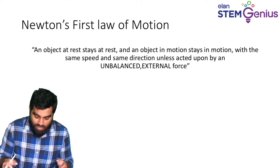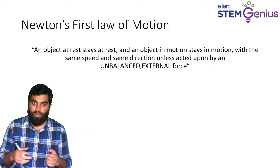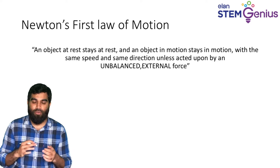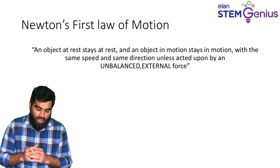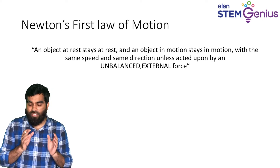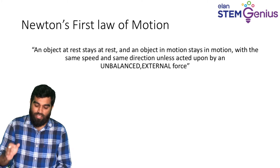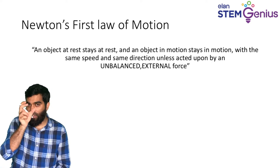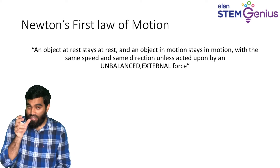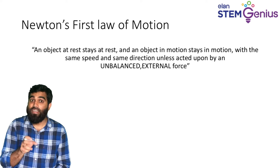The second law of motion is the rate of change of momentum, or acceleration equals force divided by mass. We have studied some theories about it. What we said is that an object stays at rest, and an object in motion stays in motion with the same speed and same direction unless acted upon by an unbalanced external force. We discussed what an unbalanced force is — it is an unequal force — and what an external force is.